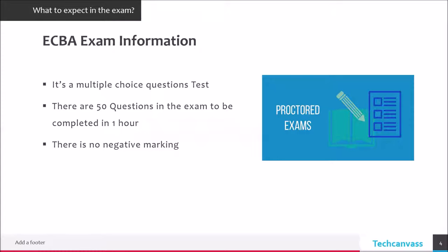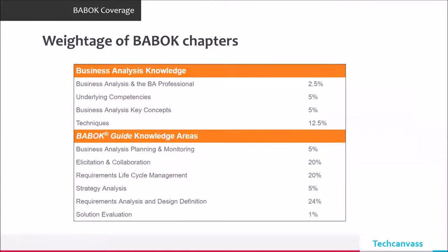So what kind of exam is this? It is a multiple choice question exam. There will be 50 questions to be completed in one hour, so from a timing perspective you have sufficient time, and the good thing is there is no negative marking. Another important thing is that you can take it from home. There are multiple chapters in the book provided by IABA and every chapter has a defined percentage in terms of number of questions.